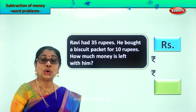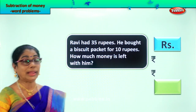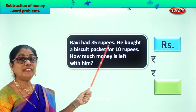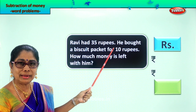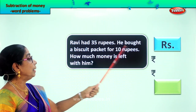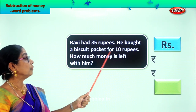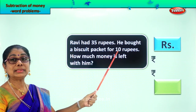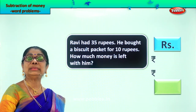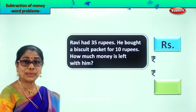Always read aloud before we work out the sum. Ravi had 35 rupees. He bought a biscuit packet for rupees 10. How much money is left with him?